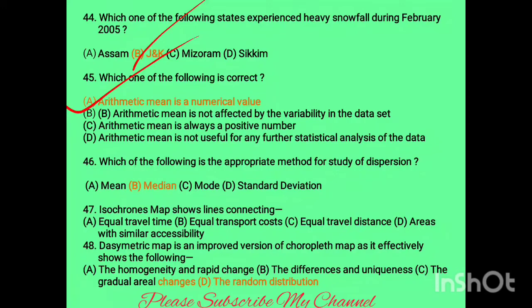Question forty-six: which is an appropriate method for the study of dispersion? The answer involves isochrones. Isochrone maps show lines connecting points of equal travel time, or areas with equal accessibility — that is the correct option. Question forty-eight: the dasymetric map is an improved version of the choropleth map that effectively shows homogeneity and rapid change.